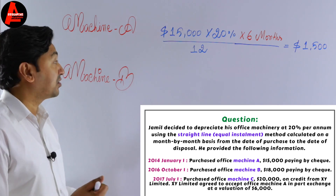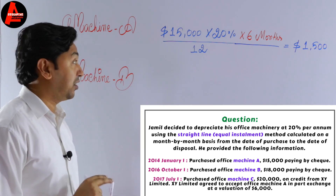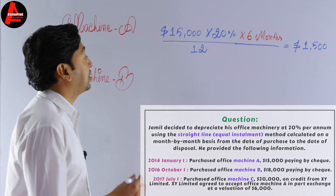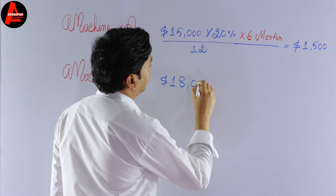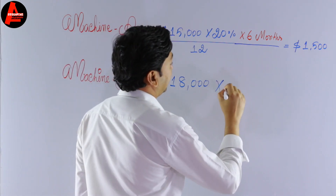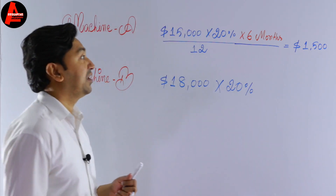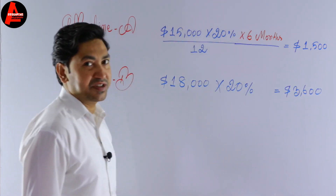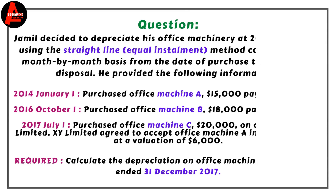The cost price of Machine B is $18,000, paid by cheque. The rate of depreciation is 20%. Multiplying 20% by $18,000 gives us $3,600. So the depreciation for Machine B for the full year 2017 is $3,600.